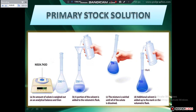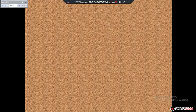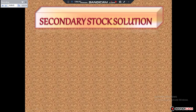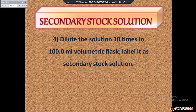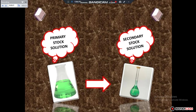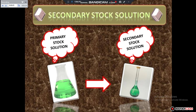After preparation of the primary stock solution, we have to prepare our secondary stock solution by diluting the primary stock solution 10 times in a 100 ml volumetric flask and label it as secondary stock solution. This picture shows how we prepare the secondary stock solution from the primary stock solution. In the fifth step, we have to prepare our working standard of nickel sulfate having concentration 6.0 × 10⁻⁵ M in a 25 ml volumetric flask by dissolving the desired volume of nickel sulfate from the secondary stock solution. Similarly, we prepare a blank solution without adding nickel sulfate in another 25 ml volumetric flask.